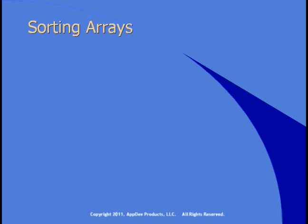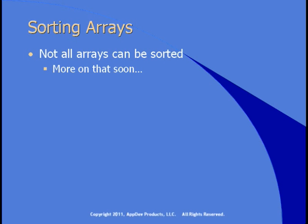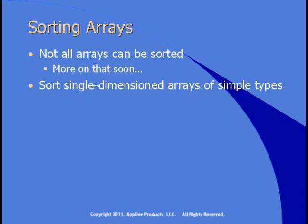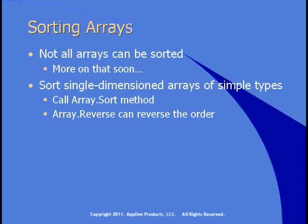Let's start looking at the interesting methods by starting with sorting. Not all arrays can be sorted — I want to say that first off, and there'll be more on that soon. You can usually sort single-dimensioned arrays of simple types. All you have to do is call the Array.Sort method. Array.Reverse is useful if you want to sort in reverse order — first sort it, and then call Array.Reverse to reverse the sort order.